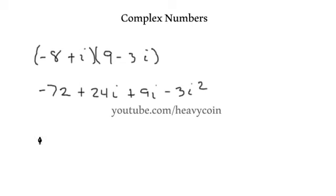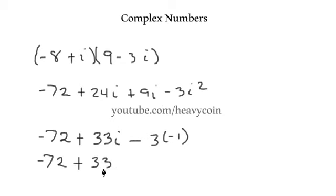And of course we can rewrite this as negative 72 plus 24 and 9 is 33i minus 3 times negative 1. So we replace the i squared with the negative 1. So we have negative 72 plus 33i plus, because we have a minus and a negative, makes that a positive. Negative 72 plus 3 is negative 69 plus 33i. And that's the form that we wanted in.